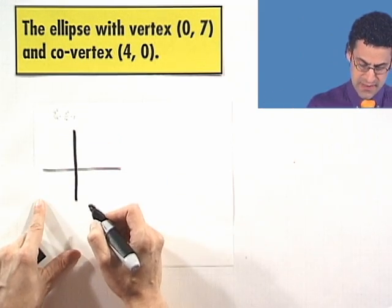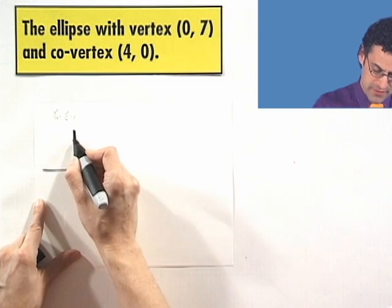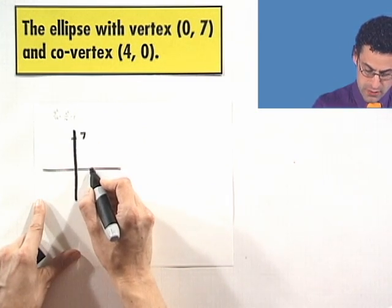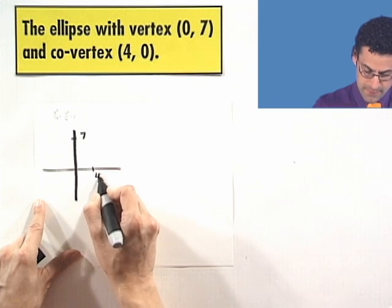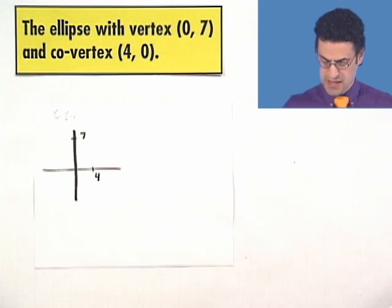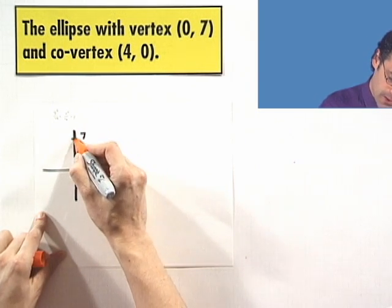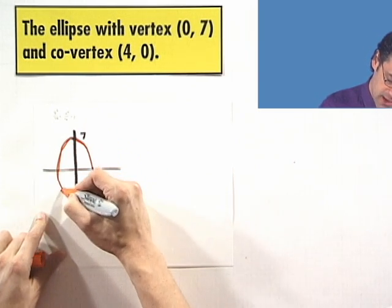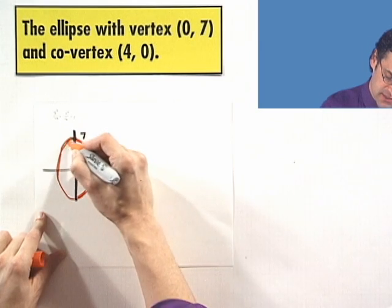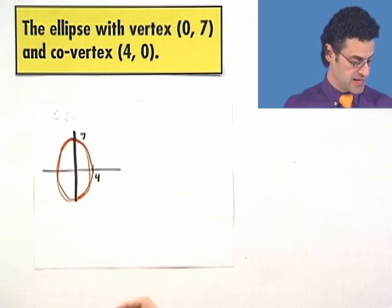Let's take a look at the graph of this. So I have 0, 7, that's way here, and 4, 0 is way out here. So you can see that this ellipse kind of must look something like this. And so the major axis is actually going to be along the y-axis. So I've got to write the y's first. That's the key thing.